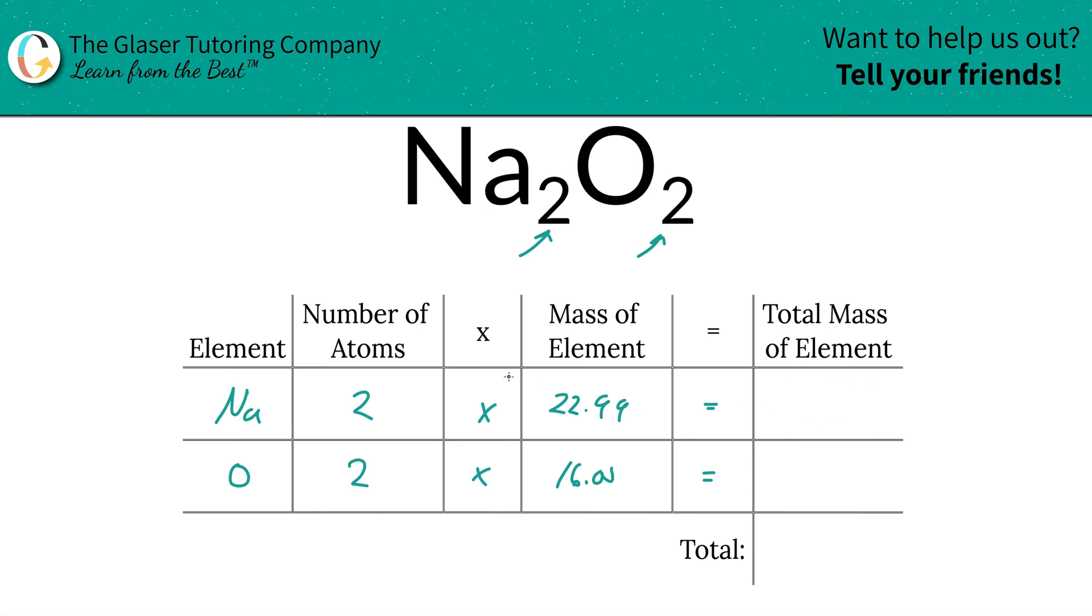To find the total mass of the element in the compound, we're simply going to multiply this row across. That would be 45.98 units of mass for sodium. And then for oxygen, it is 32 units of mass.